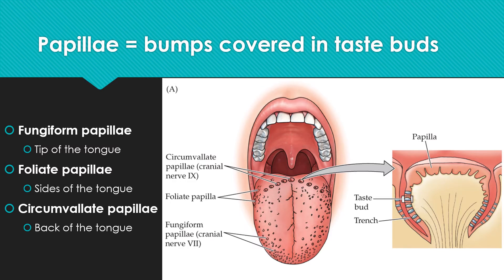You'll find fungiform papillae towards the front of the tongue, foliate papillae along either side, and circumvalate papillae towards the back. Each of these is covered in hundreds of taste buds.